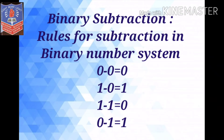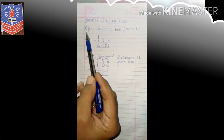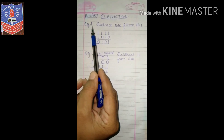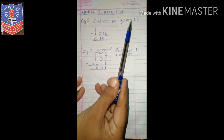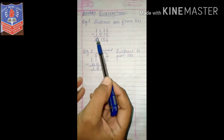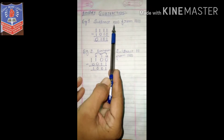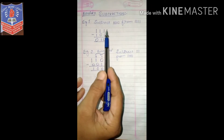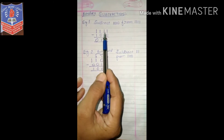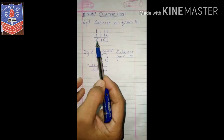Now for binary subtraction, the rules are: 0 minus 0 is 0, 1 minus 0 is 1, 1 minus 1 is 0. For 0 minus 1, we write 1 because we borrow — so 0 minus 1 is 1, or equivalently 10 minus 1 is also 1. Example: subtract 1010 from 1111. Working through: 1 minus 0 is 1, 1 minus 1 is 0, 1 minus 0 is 1, 1 minus 1 is 0. Answer is 0101.